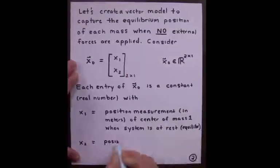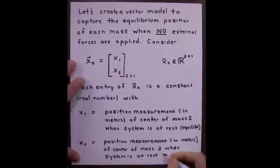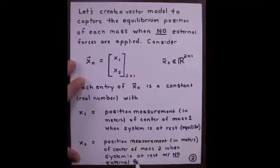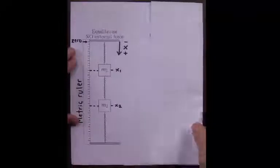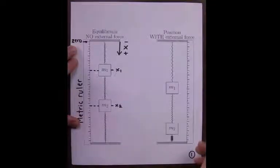x1 marks the position in meters of the center of mass one when the system is at rest, and x2 marks the position measurement in meters of the center of mass two when the system is at rest. Of course, no external forces are applied. Now, let's take a look at what happens when we apply an external force.